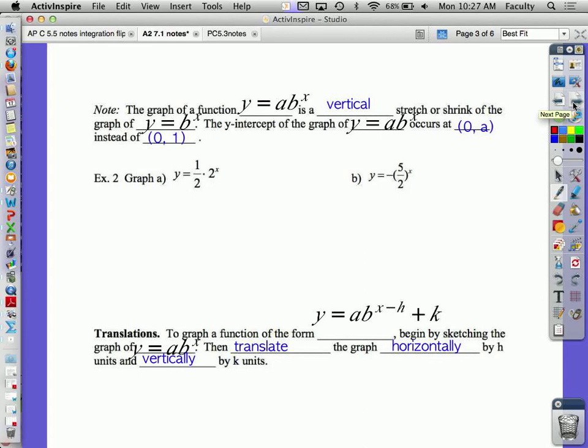Moving along. The graph of a function y equals a times b to the x is a vertical stretch or shrink of the graph y equals b to the x. The y-intercept occurs at 0, a instead of 0, 1. In letter A of example 2, it says graph y equals 1 half times 2 to the x. In letter B, I have a fraction in there. Fractions and decimals we'll do on our calculators. But this one, it's really a 2 to the x, so I can do this one by hand.